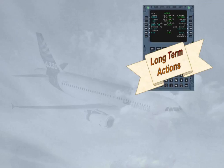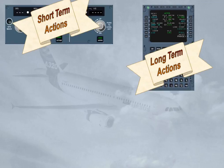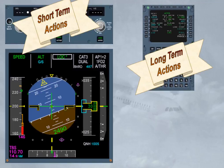Long-term actions through the MCDU and short-term actions through the FCU must be cross-checked on the Flight Mode Annunciator, FMA, located at the top of the PFD, as well as on the various scales of the PFD.